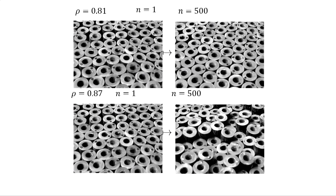Going to a higher density of 0.87 and banging 500 times, you get a very crumpled-up state. I've pointed out some red marks showing rotations, and rotations play a huge role in this system.